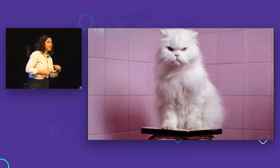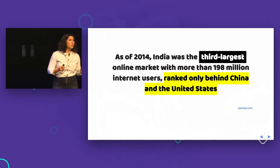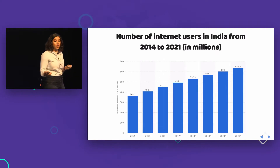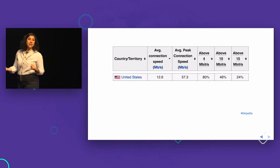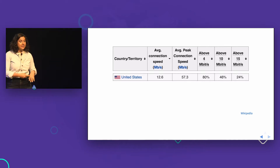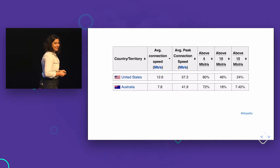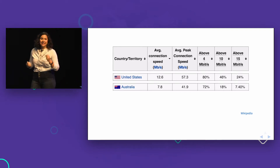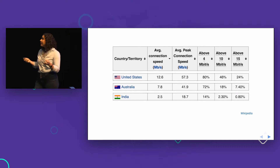Another really interesting fact is to look at the emerging web community. As of 2014, India was the third largest online market with more than 198 million internet users — a staggering number that is just continuing to grow. If we compare that to average connection speeds across the world, the US has a decent connection with an average peak of 57.3 megabits per second. Australia is at 41.9 average peak and 7.8 overall. But India's connection is so much dramatically slower, and they are the third largest online consumer of the web today.